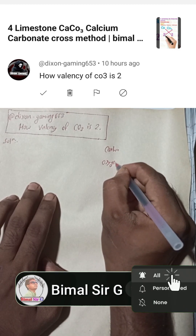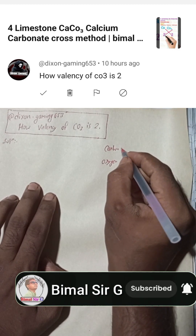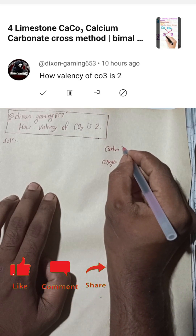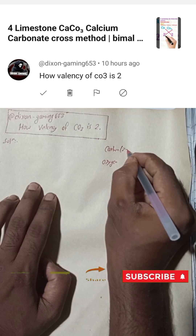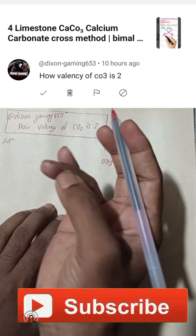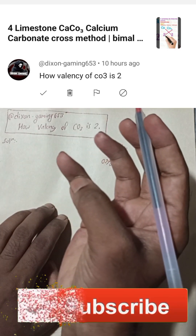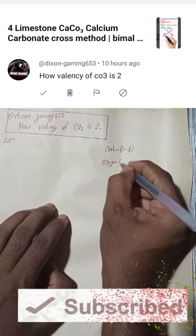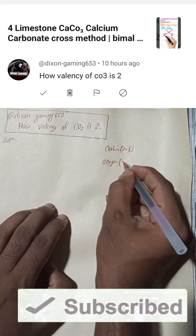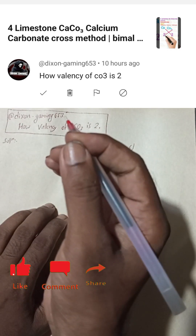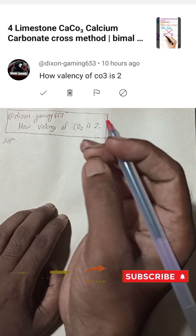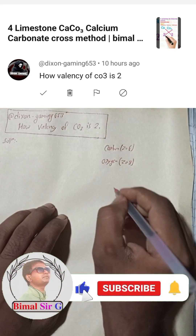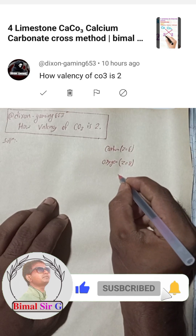The atomic number of carbon — hydrogen, helium, lithium, beryllium, boron, carbon — it is in the sixth position, so the atomic number is 6. For oxygen — hydrogen, helium, lithium, beryllium, boron, carbon, nitrogen, oxygen — that is the eighth position, so the atomic number of oxygen is 8.